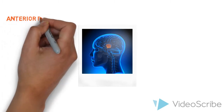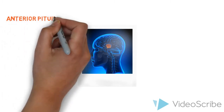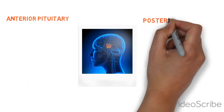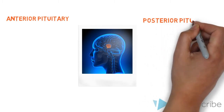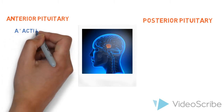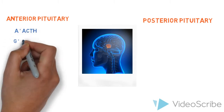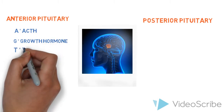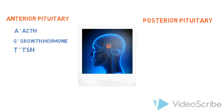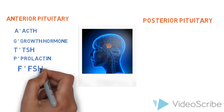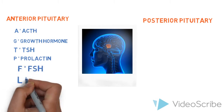The anterior pituitary is responsible for producing six hormones. The first is ACTH, which stimulates the adrenal glands. GH, or the growth hormone, also known as somatotropin, is for healthy body composition and growth in a child. TSH activates the thyroid gland to produce hormones. Prolactin is responsible for the stimulation of milk production. And then we have FSH and LH, which both work together for functioning of the testes and the ovaries.